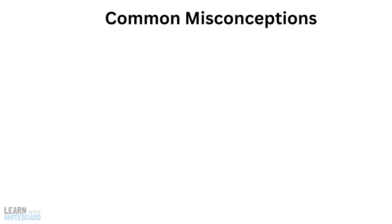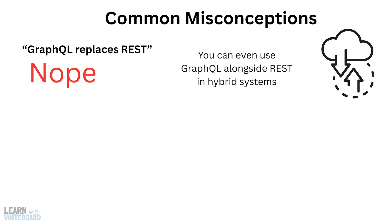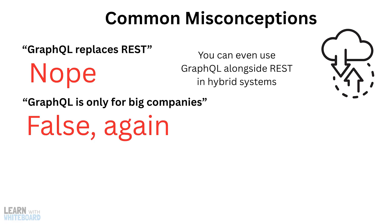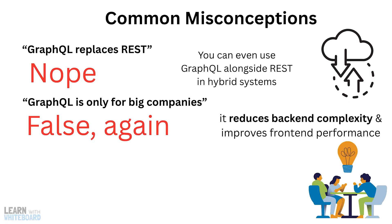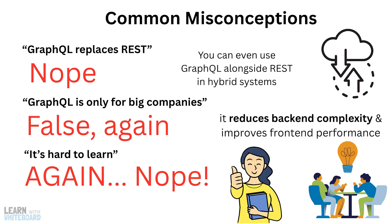Let's quickly resolve some common misconceptions. First: GraphQL replaces REST. Nope — it's an alternative approach, and you can even use GraphQL alongside REST in hybrid systems. Second: GraphQL is only for big companies. False — even small start-ups use it because it reduces back-end complexity and improves front-end performance. Third: it's hard to learn. Again, nope — once you understand how queries and schemas work, it's quite intuitive.